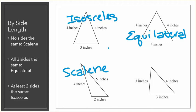And our last one. I noticed that there's two sides that are three inches. Those sides are the same length. The other side is not the same. So this one is isosceles.